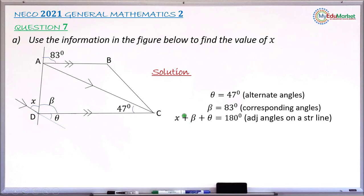I have my beta as 83 degrees and my theta as 47 degrees. So I now have X plus 83 plus 47 equals 180. So 83 and 47 correctly gives answer 130. So you now have X plus 130 degrees equals 180 degrees. Taking 130 to the right hand side, it becomes minus. So you now have 180 minus 130, that gives answer 50 degrees.